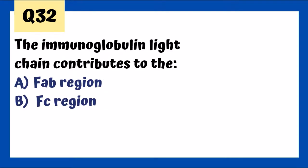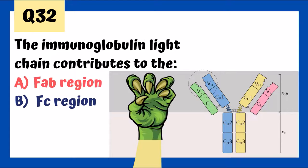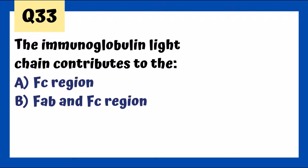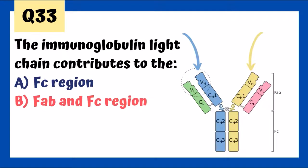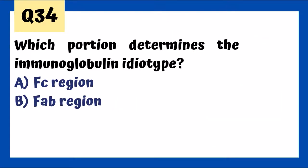The immunoglobulin light chain contributes to the FAB region — the fabulous claw. The heavy chain contributes to both the FAB and FC region. The FC region determines the immunoglobulin isotype, while the FAB region determines the idiotype.